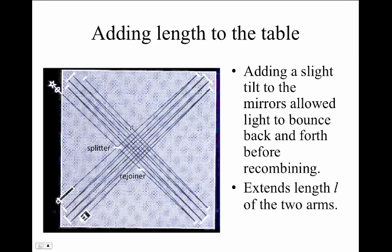Michelson looked for the cancellation or superposition of the light in his interferometer. He also expanded the length of the spectrometer arms by having the light reflect back and forth multiple times across the table. This effectively made the length of the arms very long, as much as 100 meters.